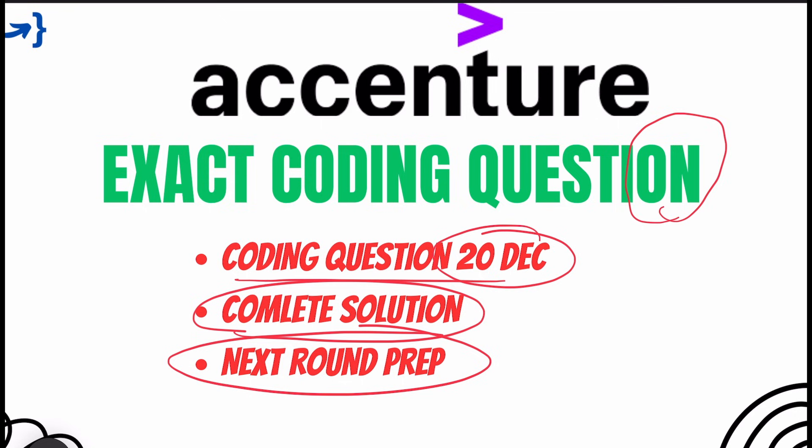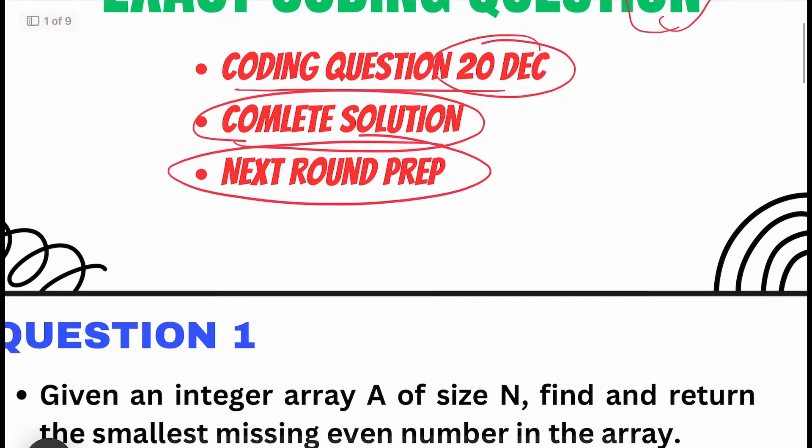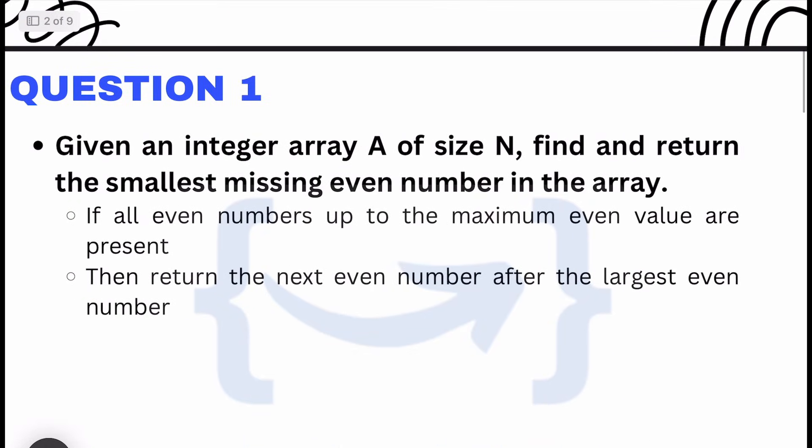Question number one: Given an integer array A of size N, find and return the smallest missing even number in the array. It's very easy - you just need to find the smallest missing even number in an optimal manner, or brute force is also acceptable. Service-based companies are less focused on optimized solutions, but you should be able to write code - that's the main motive.